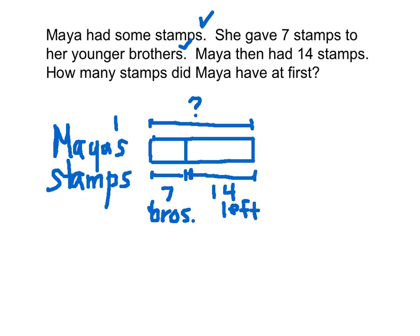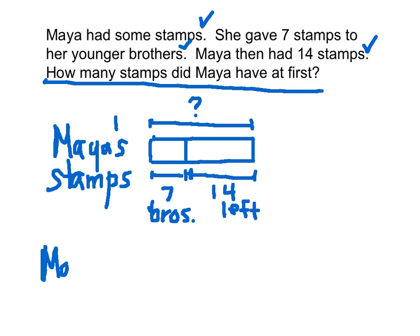Have we taken care of the information in that sentence — Maya then had 14 stamps? Yes. And this is what she had left here to here, and that's what we're trying to find — that's why the question mark is right there. Let's put the answer in a complete sentence before we begin. How many stamps did Maya have at first? Maya had blank stamps at first.